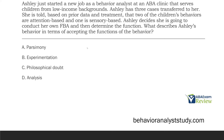A, parsimony: the simplest explanation would be to just accept the functions at face value — that's the simplest explanation. Ashley's not going that route; she's not being parsimonious, which is actually a good thing since she's going to redo the assessment. B, experimentation: we're not talking about her assessment method. We're talking about her behavior in terms of accepting the functions — and she didn't accept them.